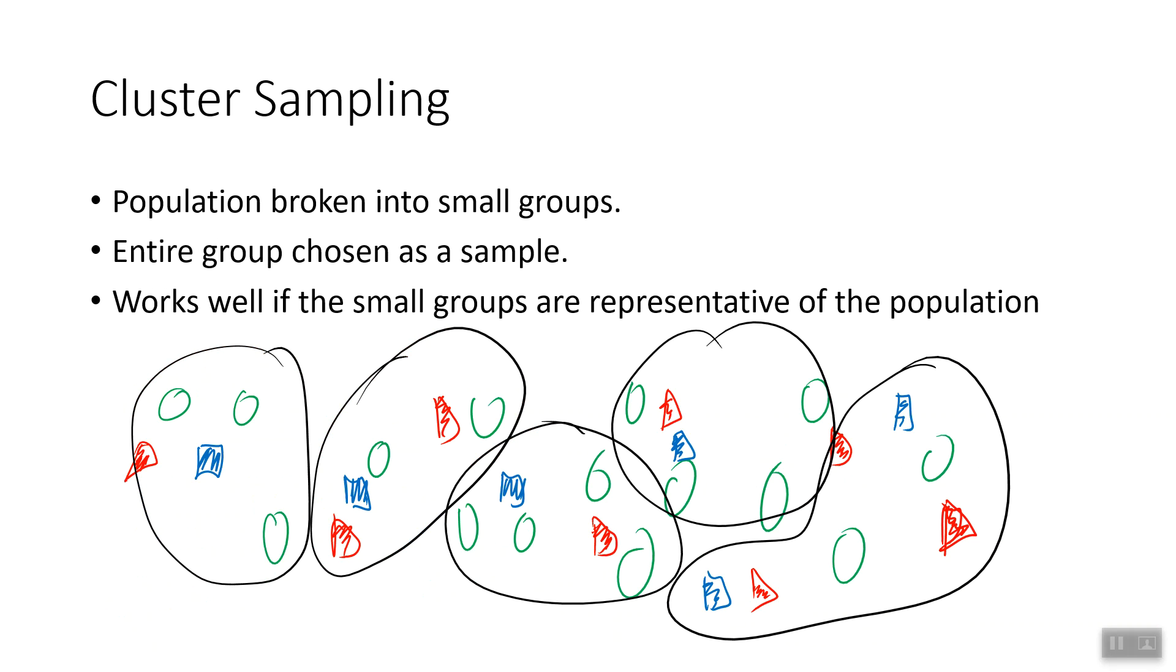So cluster sampling, on the other hand, is you break the population into small groups, and then each group is chosen as a sample.